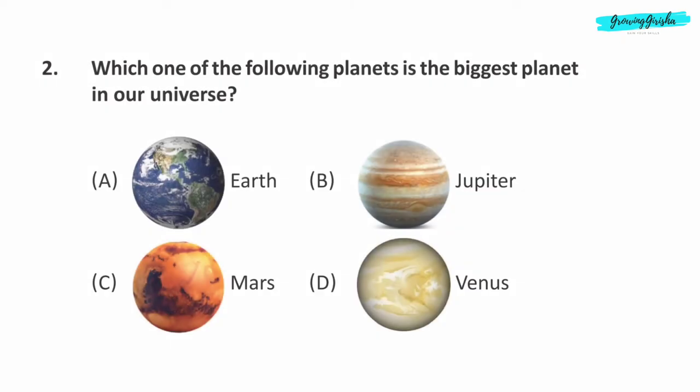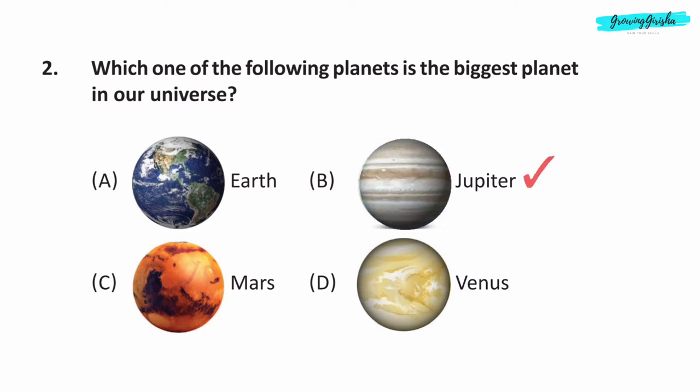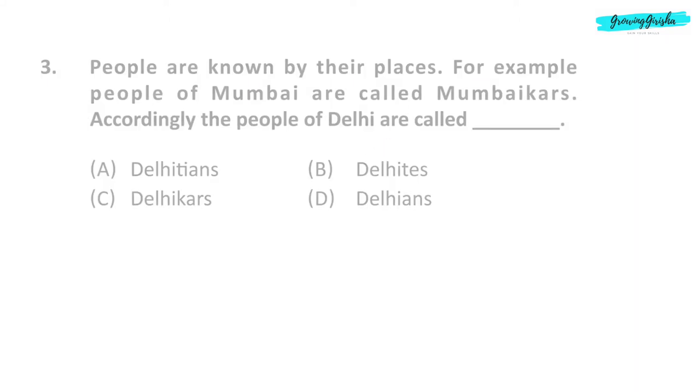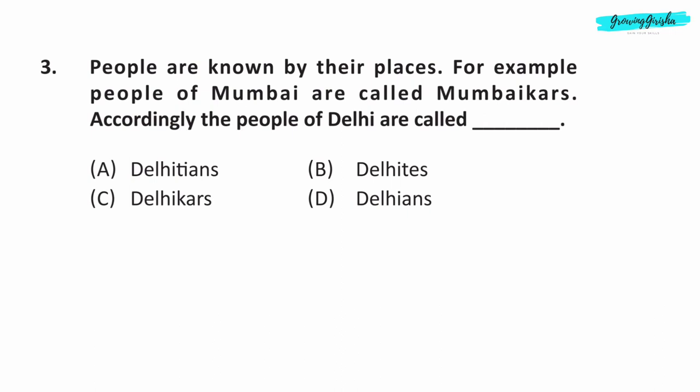Question 2. Which one of the following planets is the biggest planet in our universe? Option B: Jupiter is the biggest planet.